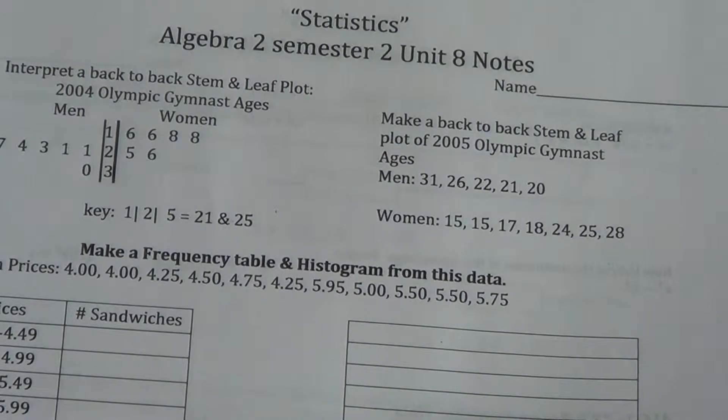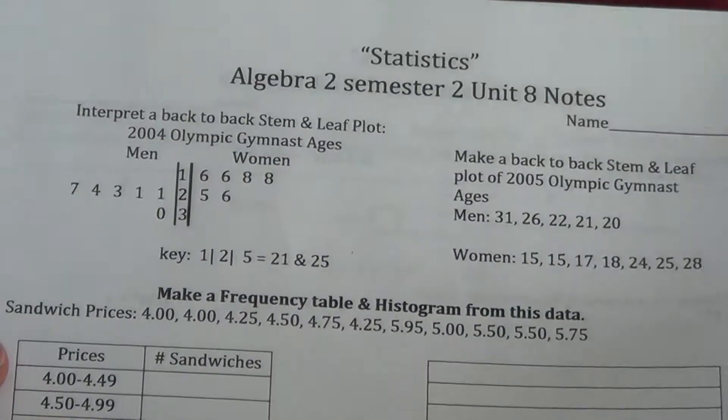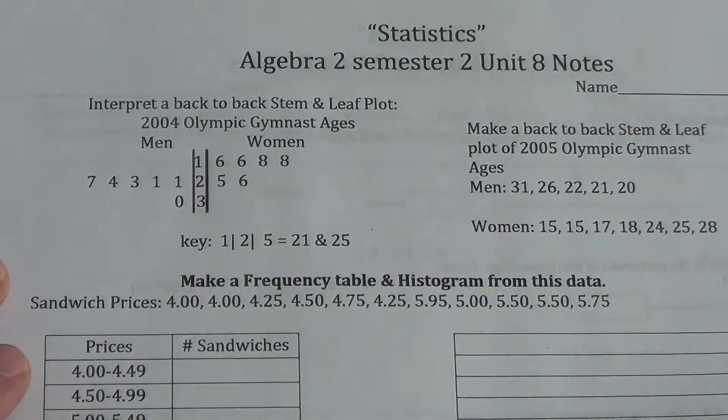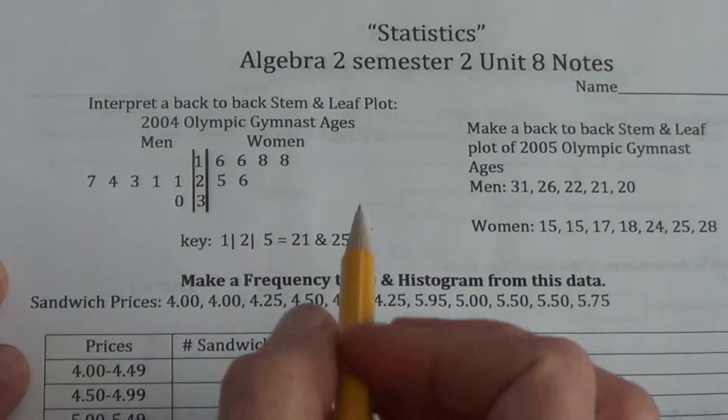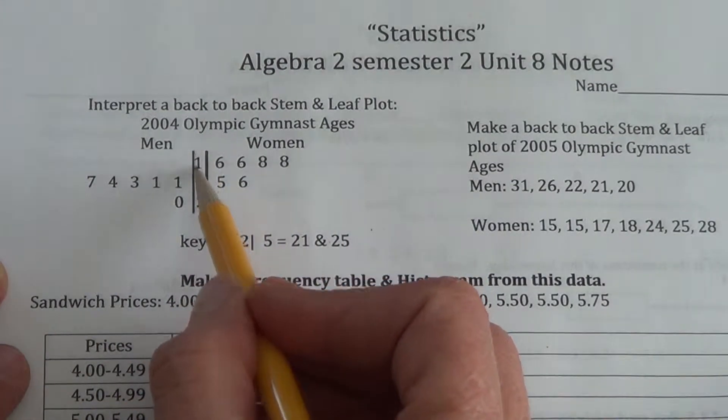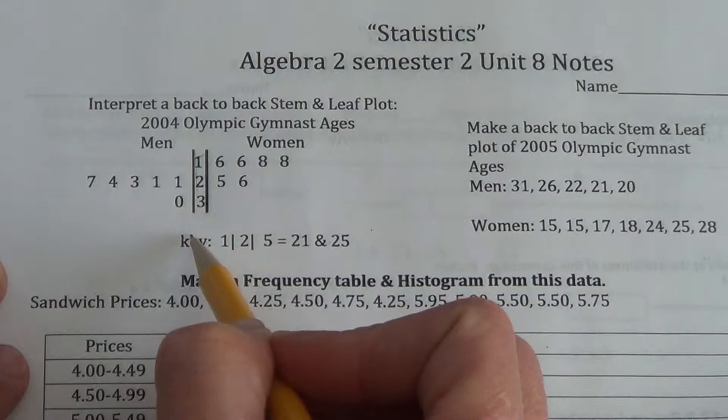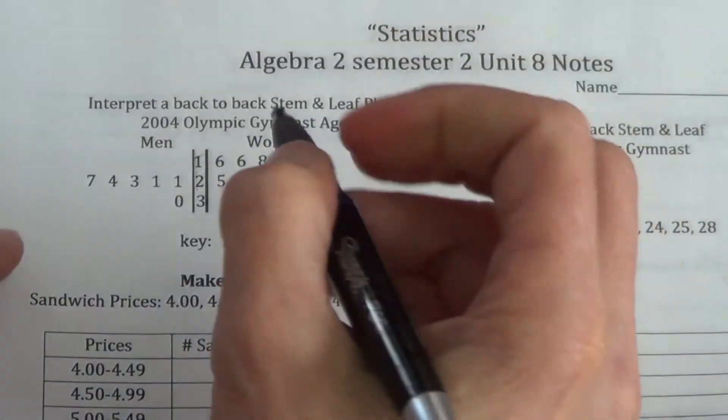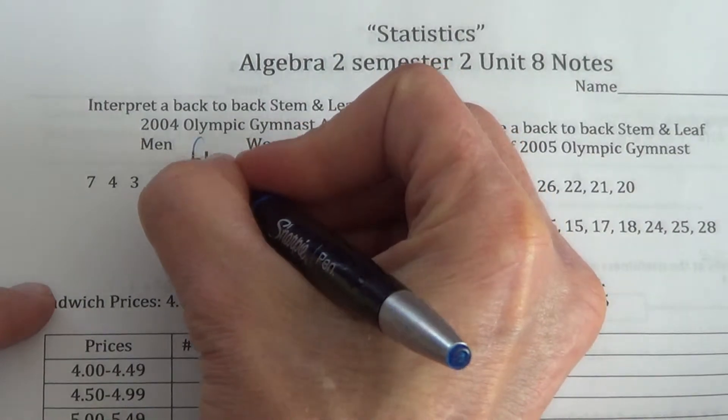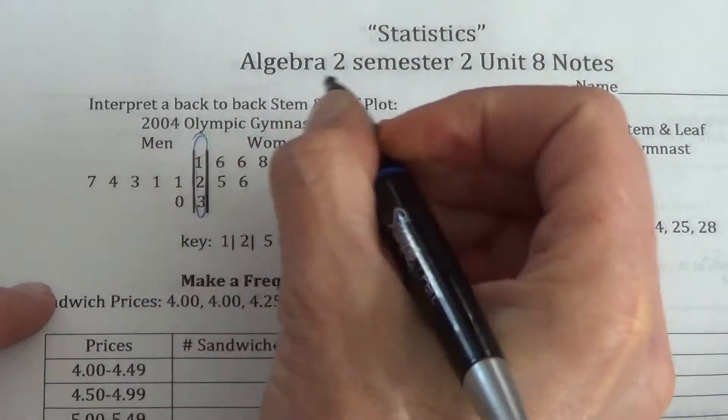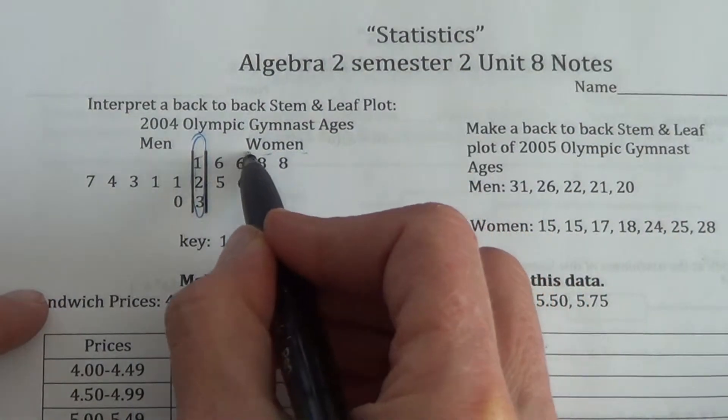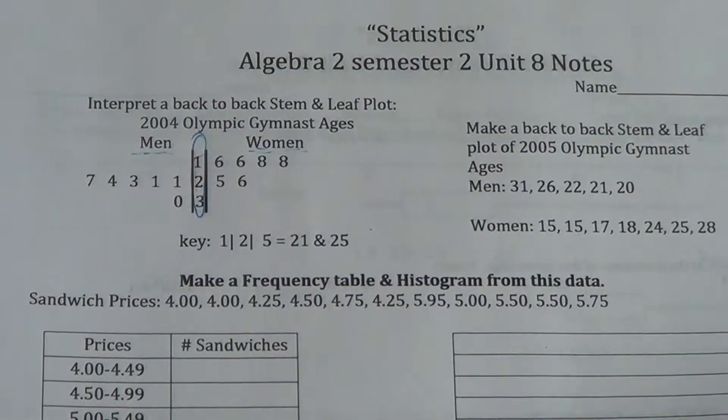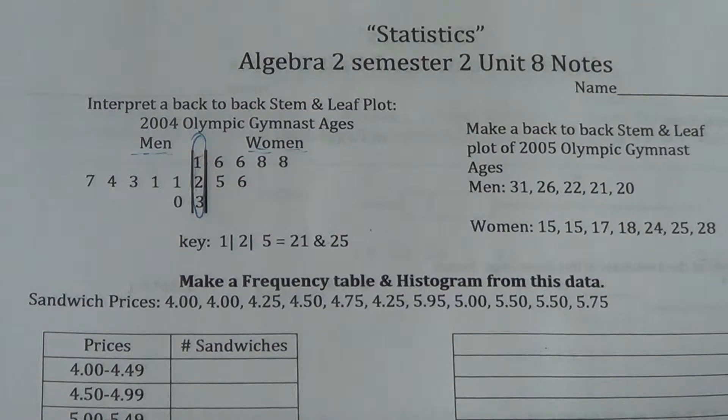What they're going to show you is back-to-back stem and leaf plots. That's what we have in the notes here. I want you to be able to interpret this. Here's your stem right here in the middle. You can kind of highlight your stem, or you can just show, hey, right there is my stem. The leaves come out for women, and they come out for men.